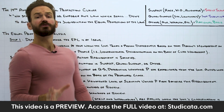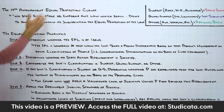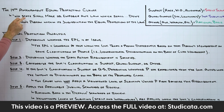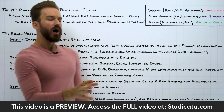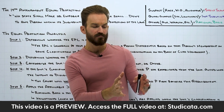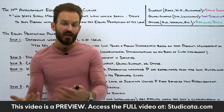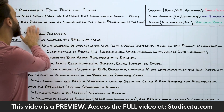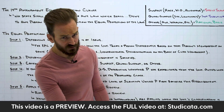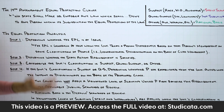The first note to make is the Equal Protection Clause tells us no state shall make or enforce any law. When we read this word 'state,' we understand, pursuant to Bolling v. Sharp, the 14th Amendment Equal Protection Clause applies to the federal government through the Fifth Amendment Due Process Clause. So even though the 14th Amendment says 'no state,' this really applies to states and the federal government as well.